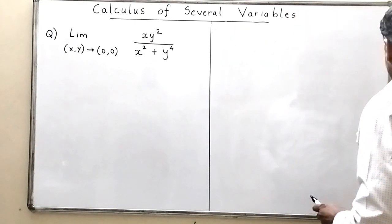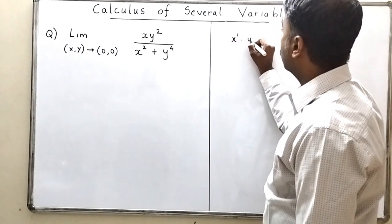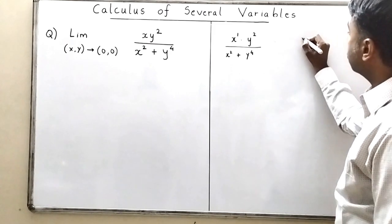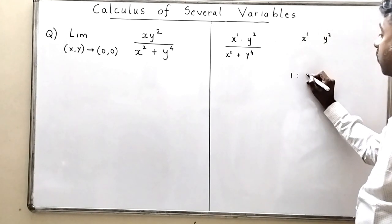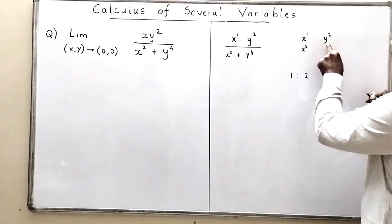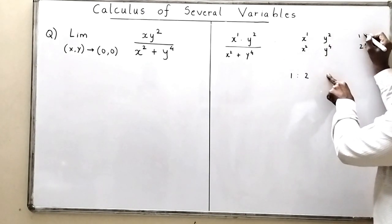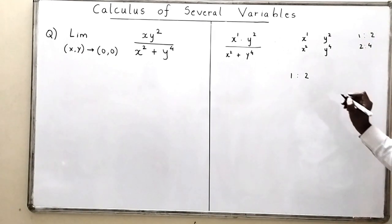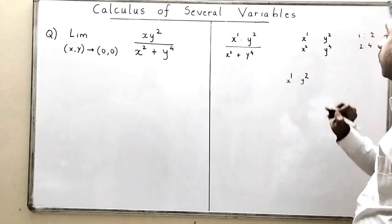Observe the ratio of powers of x and y in the expression: in the numerator x has power 1 and y has power 2, giving ratio 1:2. In the denominator, x² and y⁴ also give ratio 2:4, which simplifies to 1:2. Since the ratios are consistent, instead of y = mx, substitute along the path x = y² and introduce m as a constant.